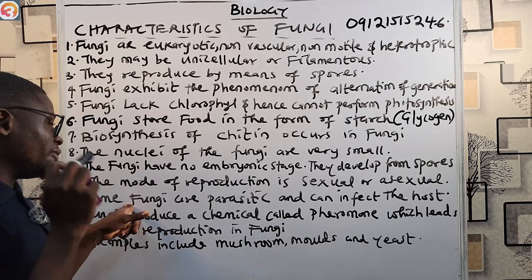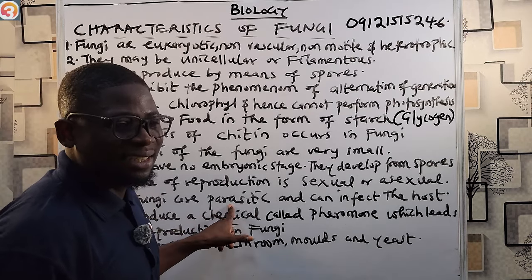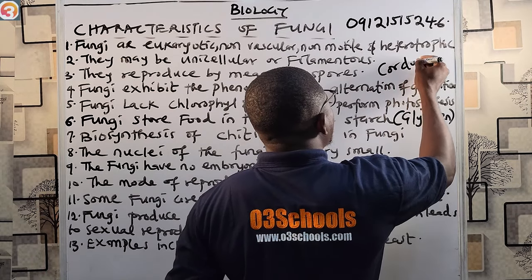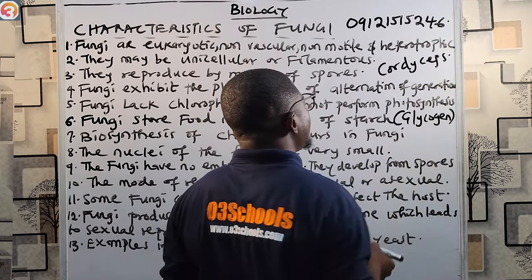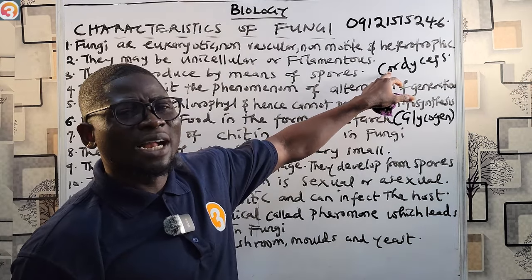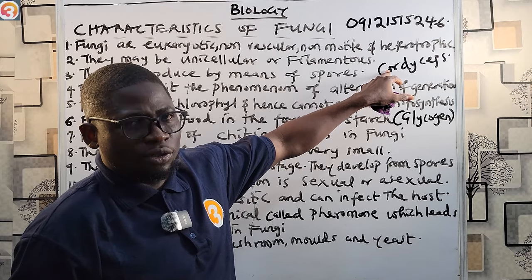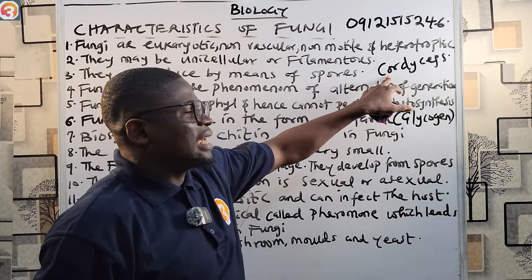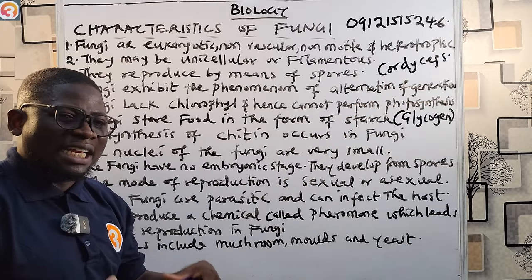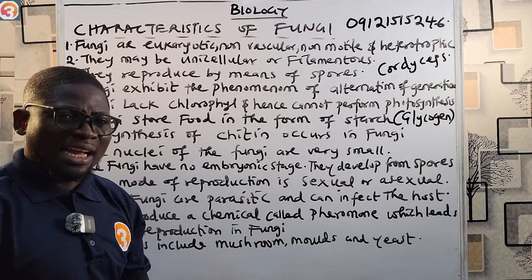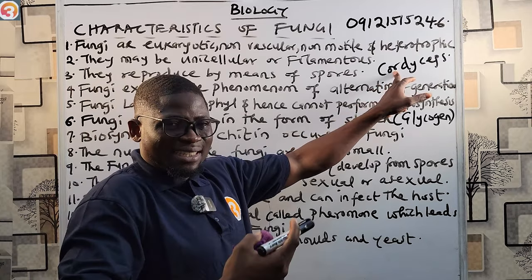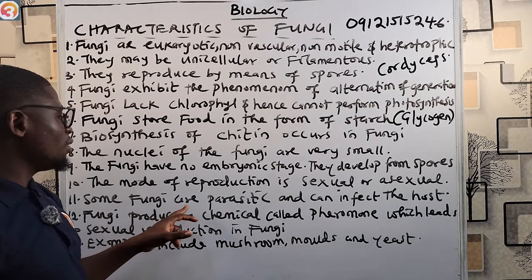An example of parasitic fungi is one we call Cordyceps. These Cordyceps are also called zombie-like fungus. They infect insects and ants — they infect insects like ants and spiders. So some fungi are parasitic and can infect their host.